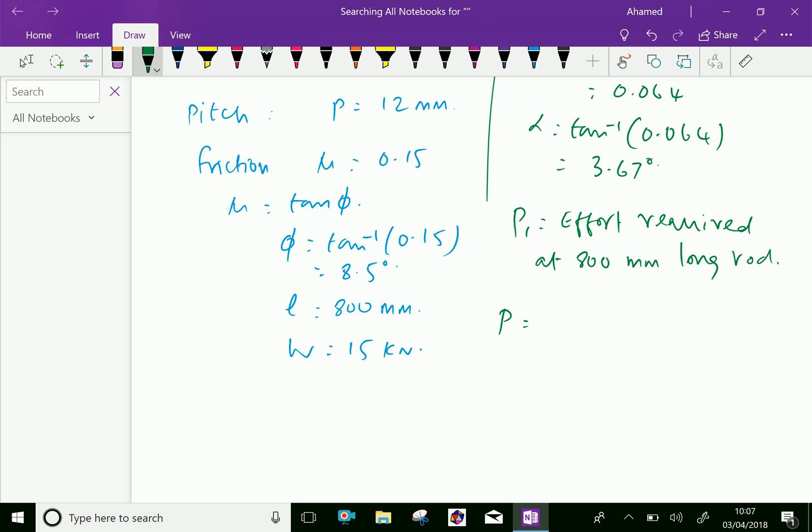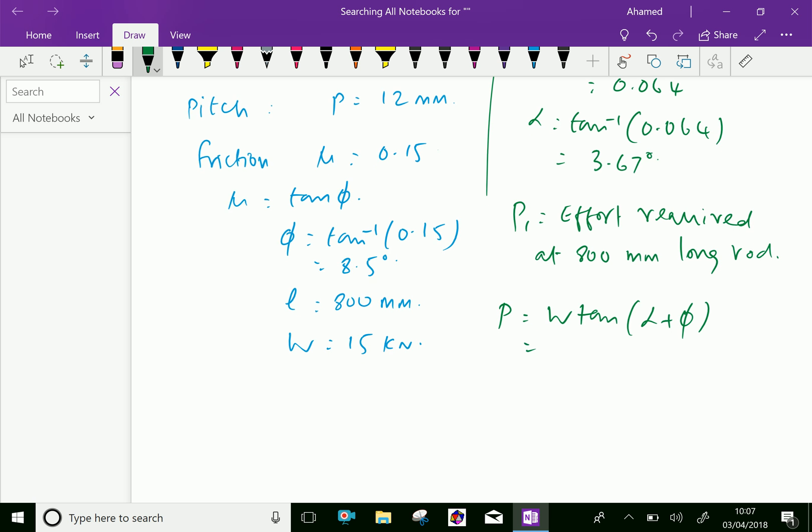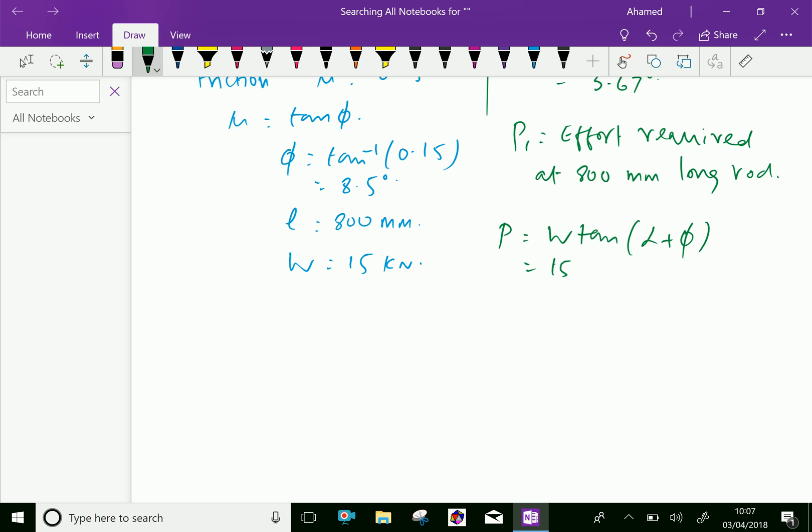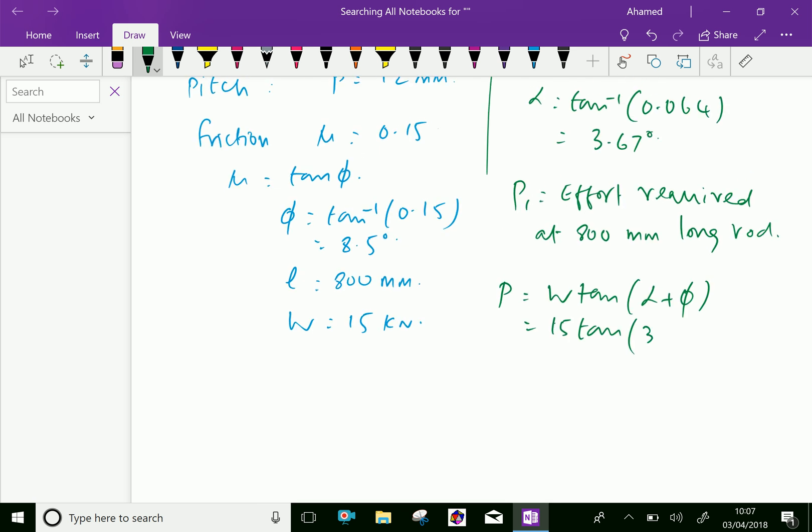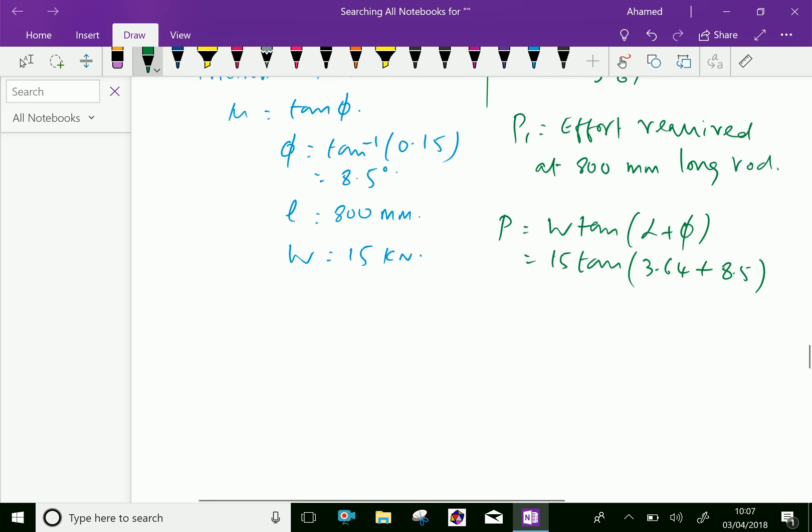P equals W equals 15 kilonewton, tan of alpha we have 3.64 plus phi we have 8.5. So let us calculate: 15 into tan of 3.64 plus 8.5, which equals 3.227 kilonewton.